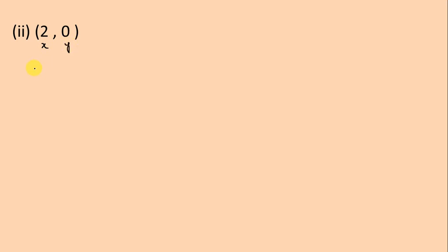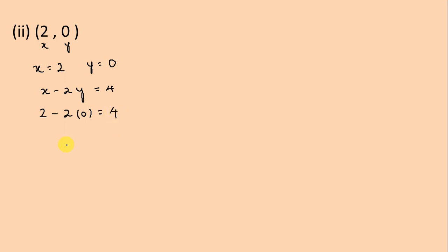Let's move to the next part. Here x = 2 and y = 0. We write our equation: x minus 2y is equal to 4. We replace x with 2 and y with 0: 2 minus 2 times 0 is equal to 4, giving 2 minus 0 equals 2. Here 2 is not equal to 4, so therefore (2, 0) is not the solution of the equation.